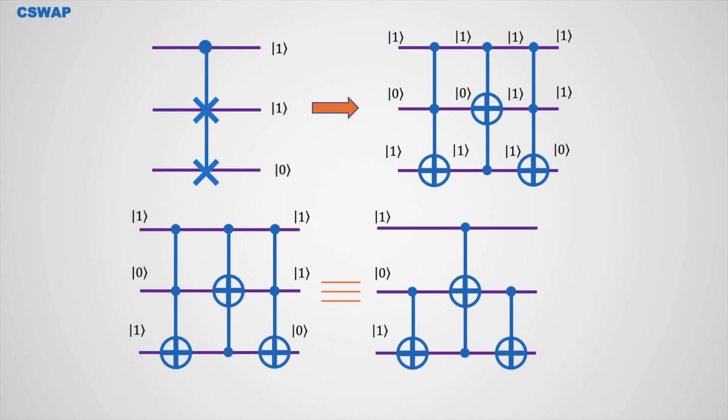This is the input. Since the control bit is in |0⟩ state, there is no change in the output. When both control bits are in |1⟩ state, the qubit transforms from |0⟩ to |1⟩. Since the control bit is in |1⟩ state, this one changes its state from |1⟩ to |0⟩. You can see the swapping is done.